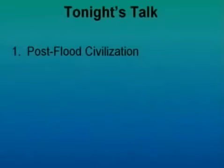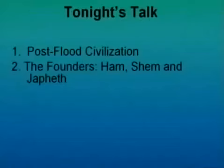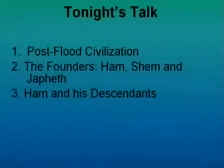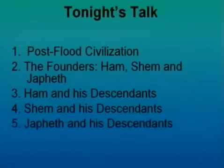Tonight's talk is going to be looking at several things. Firstly, post-flood civilization, because what we're looking at — Genesis chapter 10 — is after the flood of Noah, and what happened to Noah and his descendants, and where those families, tribes, and clans spread and migrated in the ancient world. We're going to look at the founders of what I call the new world: Ham, Shem, and Japheth, the sons of Noah, and their descendants. And lastly, we'll have a conclusion.